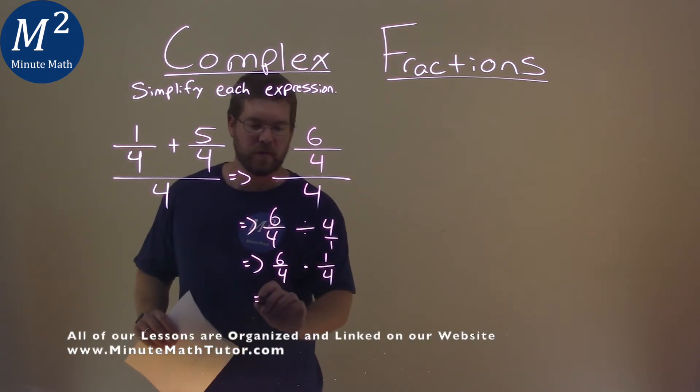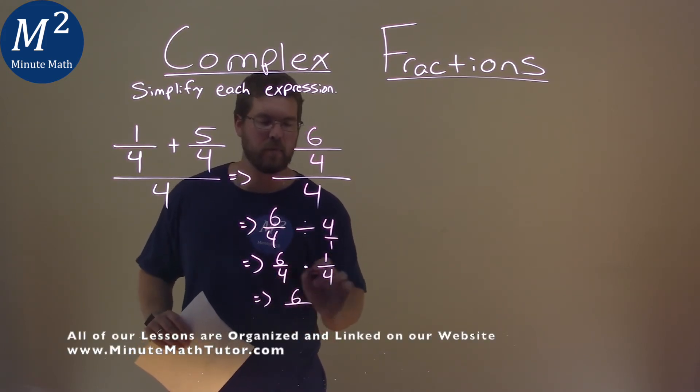From there, we can multiply this out. 6 times 1 is 6, and 4 times 4 is 16.